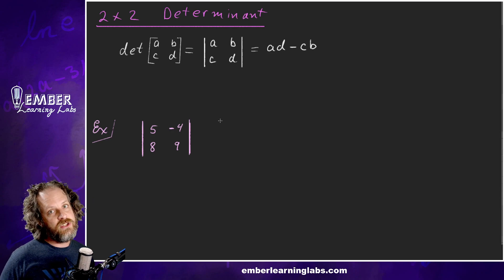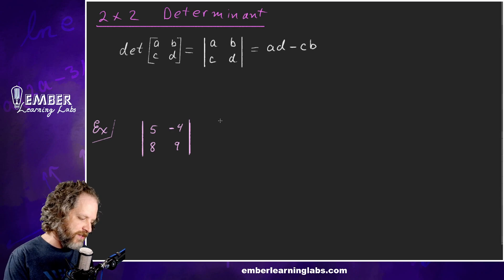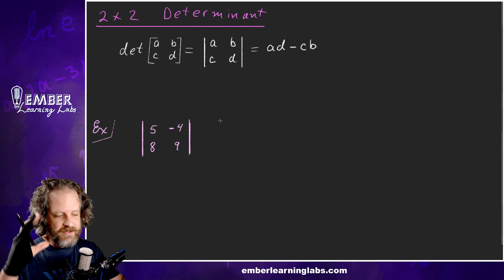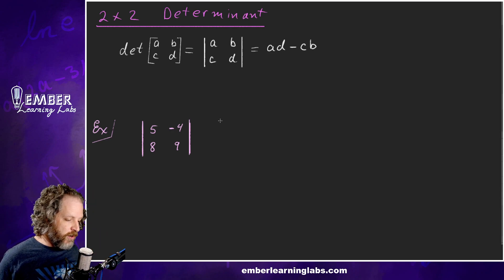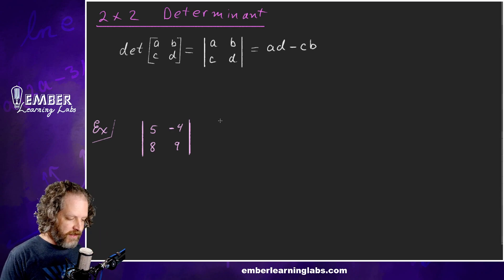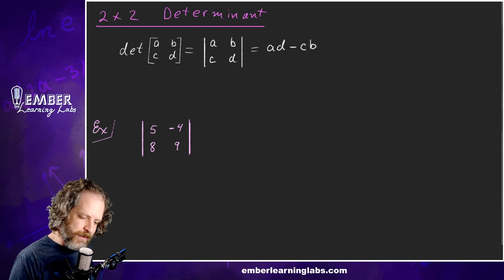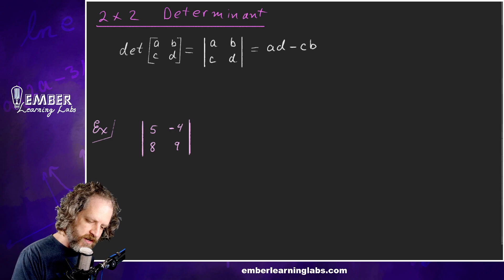Now this doesn't mean absolute value in this context — it means determinant. How would you know which is which? Well, in context, if it's a matrix-like thing with all this stuff, then we're talking about determinant. I may even need more colors than what I usually use.